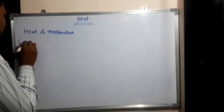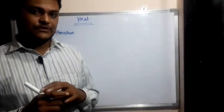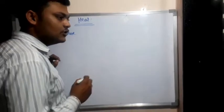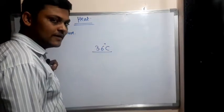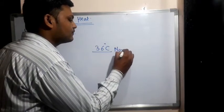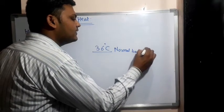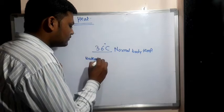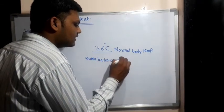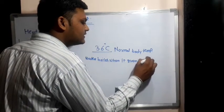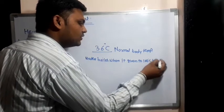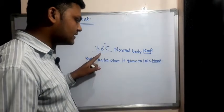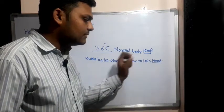Our first point is latent heat. To understand that, let me first explain the difference between heat and temperature. The normal body temperature is 36 degrees Celsius — here I have used the word 'normal body temperature.' But we also say water boils at 100 degrees Celsius. Both statements use different contexts, so what is the difference between heat and temperature?